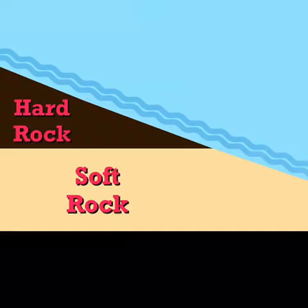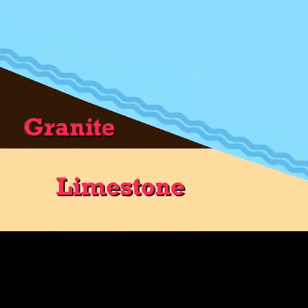As the river moves downstream it may encounter an area where a band of hard rock lies above a band of soft rock. An example of a hard rock is granite and an example of a soft rock is limestone.